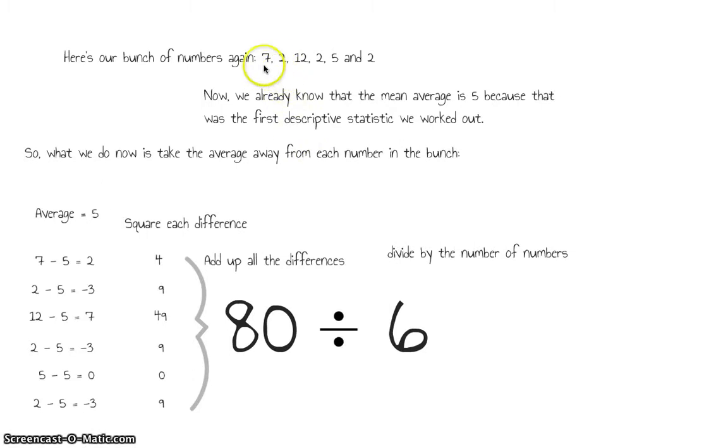And that comes out when you do it in your calculator as 13.3 recurring, which is kind of unhelpful because as you can see, when we calculated the plain old fashioned range, we got 10 and we said that was misleadingly large. Well, this is even bigger still.